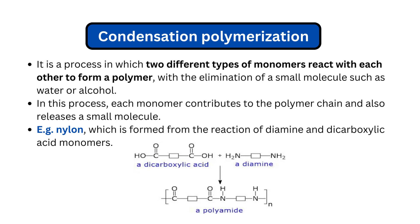Both addition and condensation polymerization can produce high-quality polymers with a wide range of applications. The choice of polymerization method depends on various factors such as the property requirements of the final polymer, the monomers being used, and the environmental impact of the process.